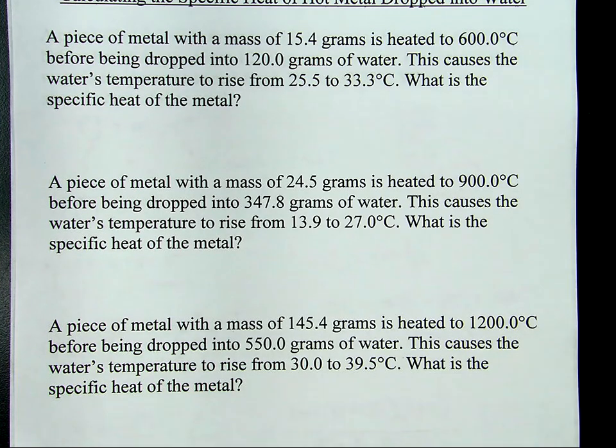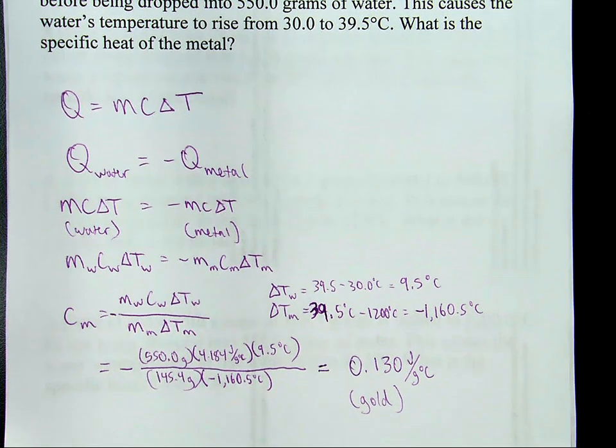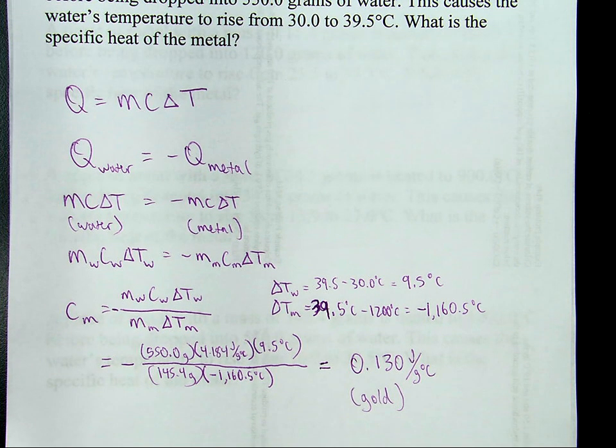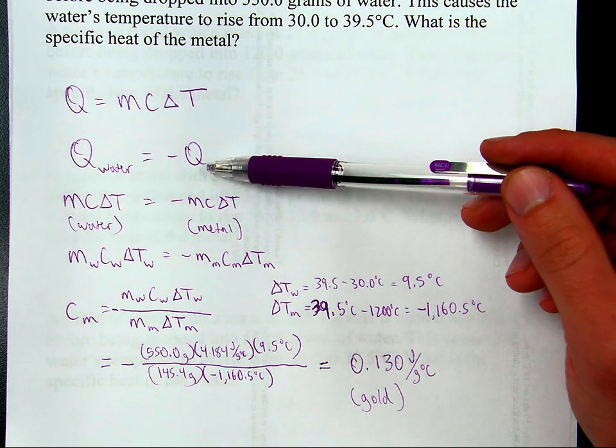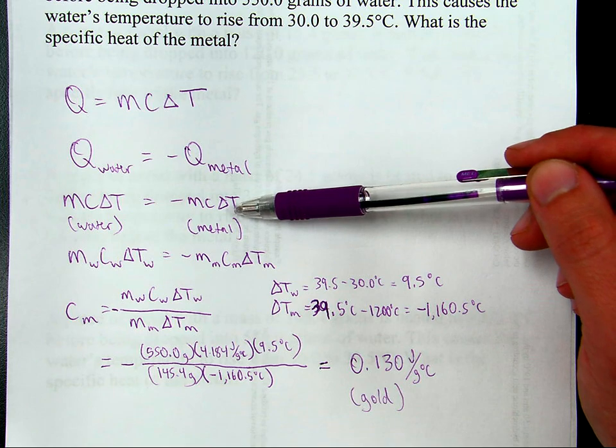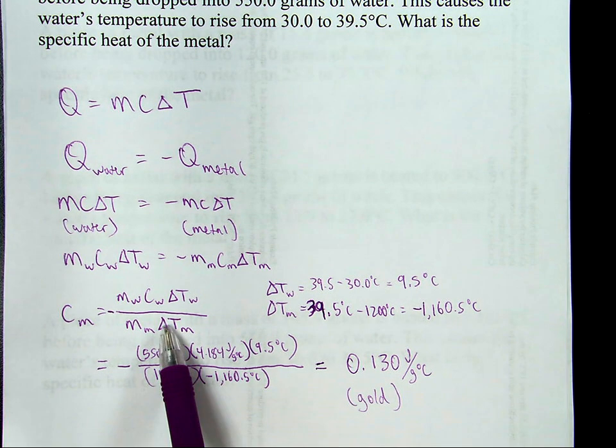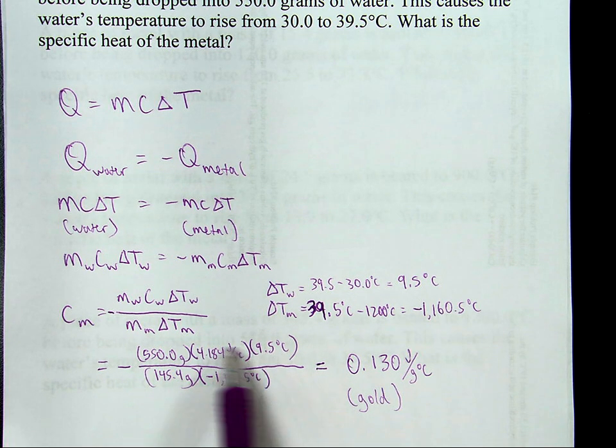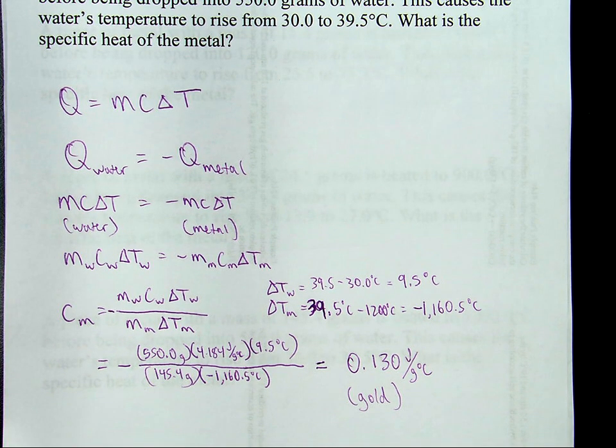And then the other one, this question. Here's the answer to the other question. Once again, same process where q equals mc delta t, q of water equals negative q of metal, mc delta t for water equals negative mc delta t for metal. So we write that out this way, this becomes this, this becomes this. Rearrange to solve for specific heat. Figure out delta t's, plug in the numbers, solve, and it's a number that matches with the specific heat for gold. All right, ladies and gentlemen, there we have it. Happy studying.